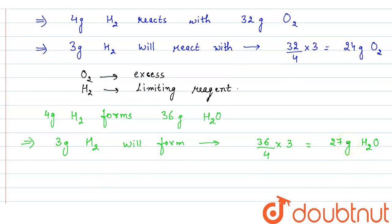If 4 gram H2 forms 36 gram of H2O, then 3 gram H2 will form 27 gram of H2O. So this is the maximum amount of H2O that can be formed.